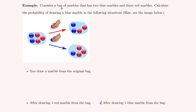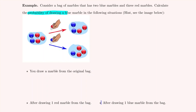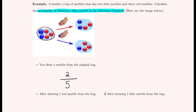In this example we consider a bag of marbles that begins with two blue marbles and three red marbles. What is the probability of drawing a blue marble from the original bag? Probability is the number of ways what we're looking for could occur divided by the total number of options. There are five marbles in the bag, and two of them are blue, so the probability of drawing a blue marble is two-fifths.